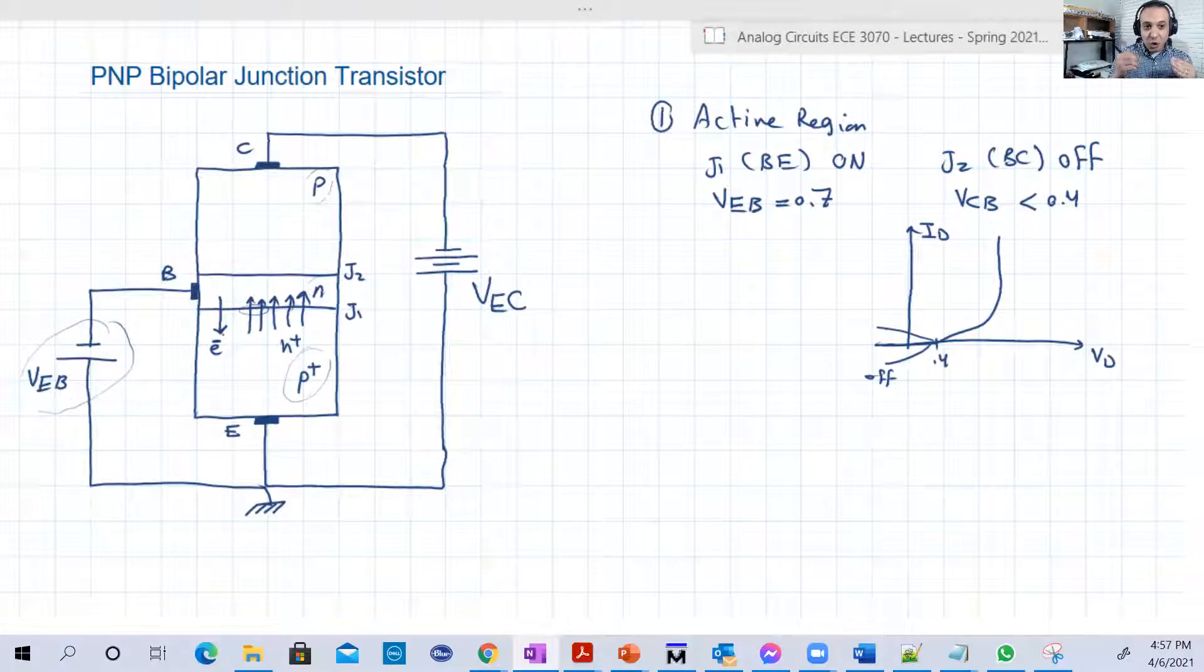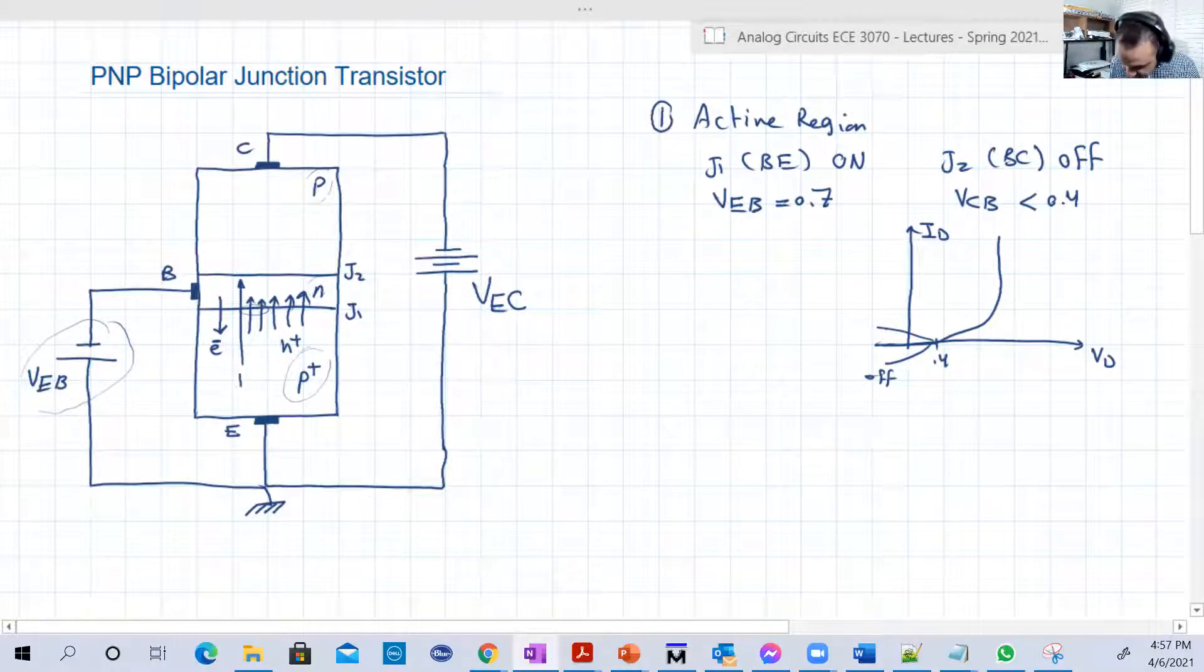Remember, the current is opposite to the direction of the electrons and with the same direction of the holes. So there will be a current in that way due to the holes IH, and another current in that way, IN or IE, whatever you call it. Look, IE is different, it's opposite to the direction of the electrons.